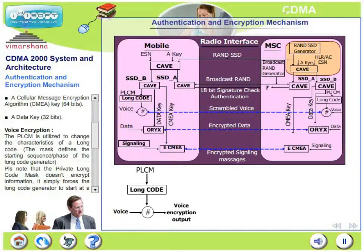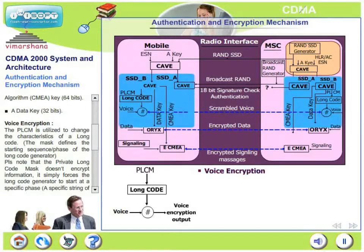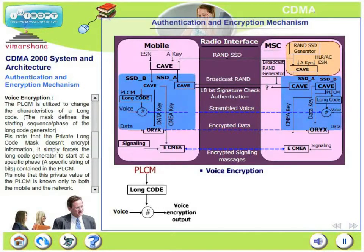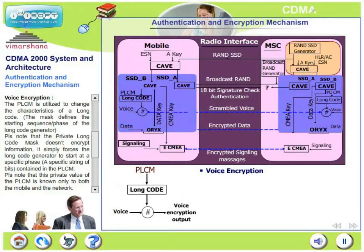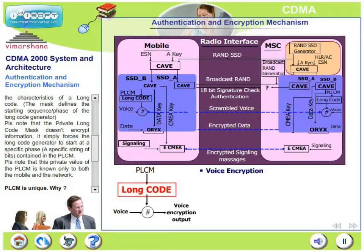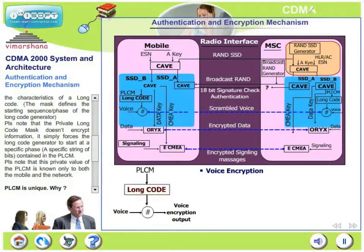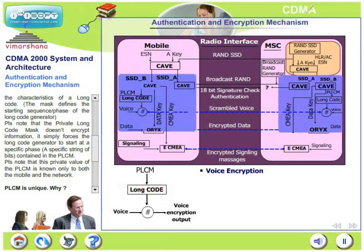Now let's look at what happens with voice encryption. PLCM is utilized to change the characteristics of a long code. The mask defines the starting sequence or starting phase of the long code generator. PLCM consists of a 42-bit word, and this 42-bit word is loaded onto the long code generator which has 42 shift registers. This 42-bit long code mask therefore defines the starting bit sequence of the long code generator, and that is how the PLCM influences the starting phase.